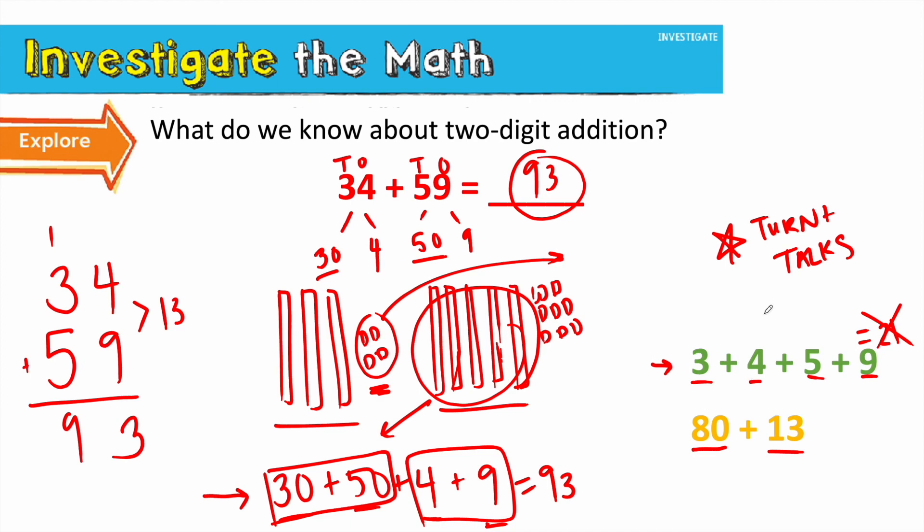Maybe some kids are doing mental math here. Maybe some kids need to stack and add. Okay. 80 plus 13 is 93. Is it equivalent? Yes. And you want to make sure you make this connection if a kid doesn't make it. Oh, this is equivalent because 80 came from the tens and 13 came from the ones.